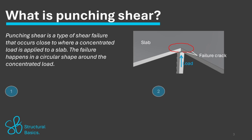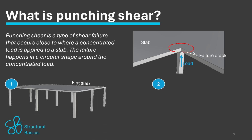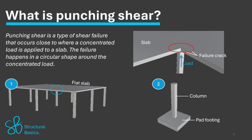The two main situations where punching shear occurs are flat slabs supported by columns. For this example the most critical location for punching shear will be at the center column, as this column takes up the most load. The second example where punching shear can occur are pad footings or foundation rafts that support a column.